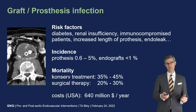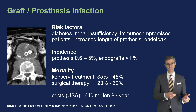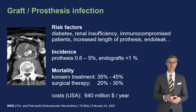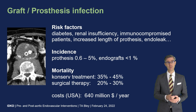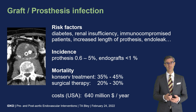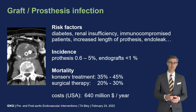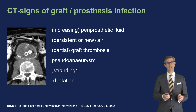Graft or prosthesis infection risk factors include diabetes, renal insufficiency, immunocompromised status, increased length of prosthesis or stent graft, and endoleaks — several of which applied to our patient. Incidence varies depending on the material: prosthesis 0.6% to 5%, endografts less than 1%. Mortality is high: 35%–45% with conservative treatment and 20%–30% with surgical therapy, and costs are high as well.